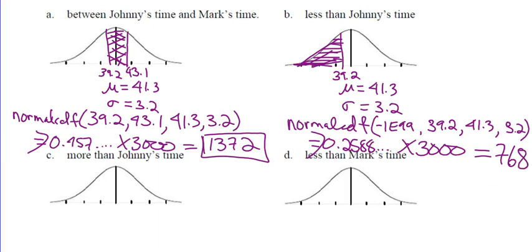A student asks: can you use the advantage of 3,000 minus the number you got? Yeah, you could go 3,000 minus 768. It's the design type — like if you want to paint a room with 500 square feet of wall and a can covers 400 square feet, how many cans do you need? You need two, even though rounding might say one. You always round up when dealing with discrete whole items.